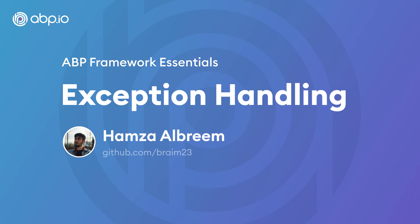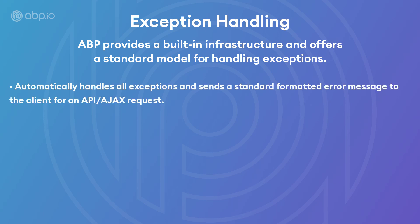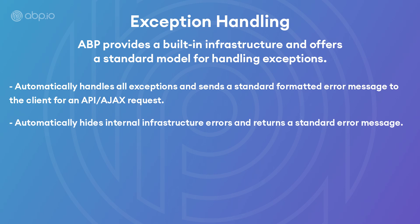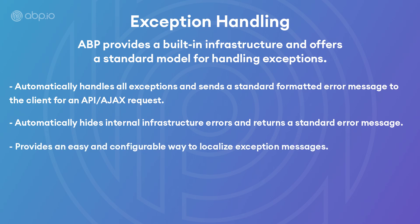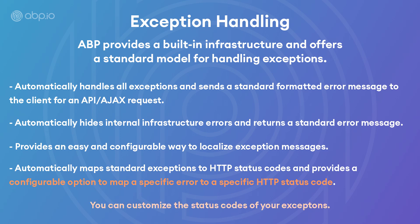In this video we'll talk about exception handling with the ABP framework. ABP provides a built-in infrastructure and offers a standard model for handling exceptions. It automatically handles all exceptions and sends a standard formatted error message to the client for an API request. It automatically hides internal infrastructure errors and returns a standard error message. It provides an easy and configurable way to localize exception messages, and it automatically maps standard exceptions to their proper HTTP status codes. It also provides an option to map a specific error to a specific HTTP status code, so you can customize the status codes of your exceptions.